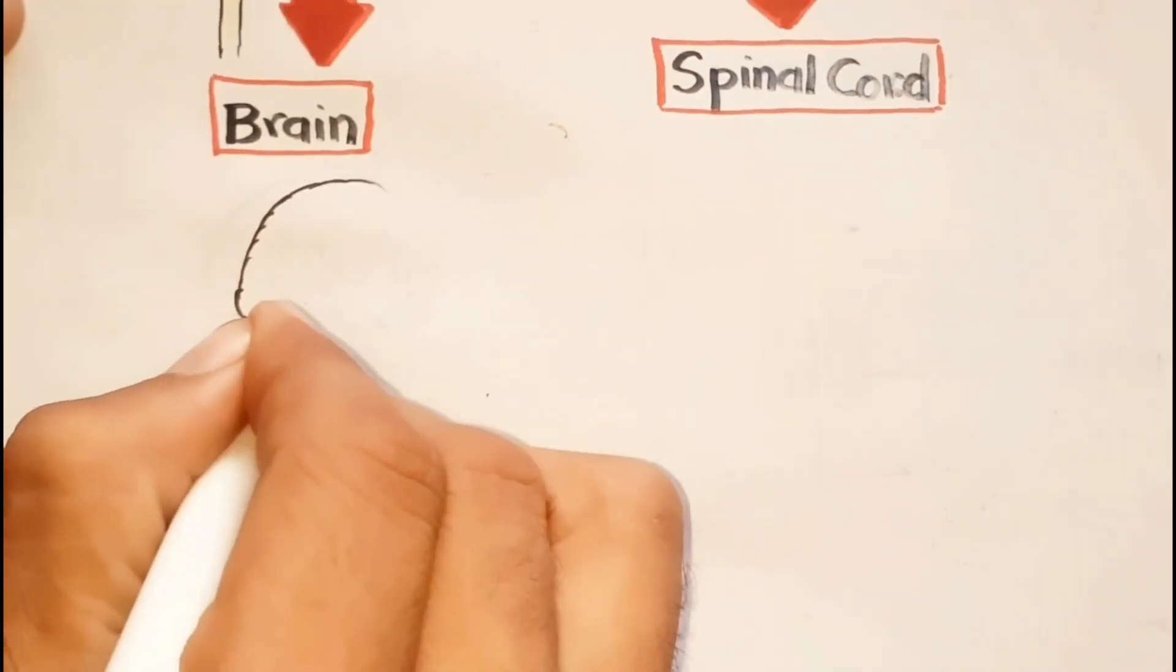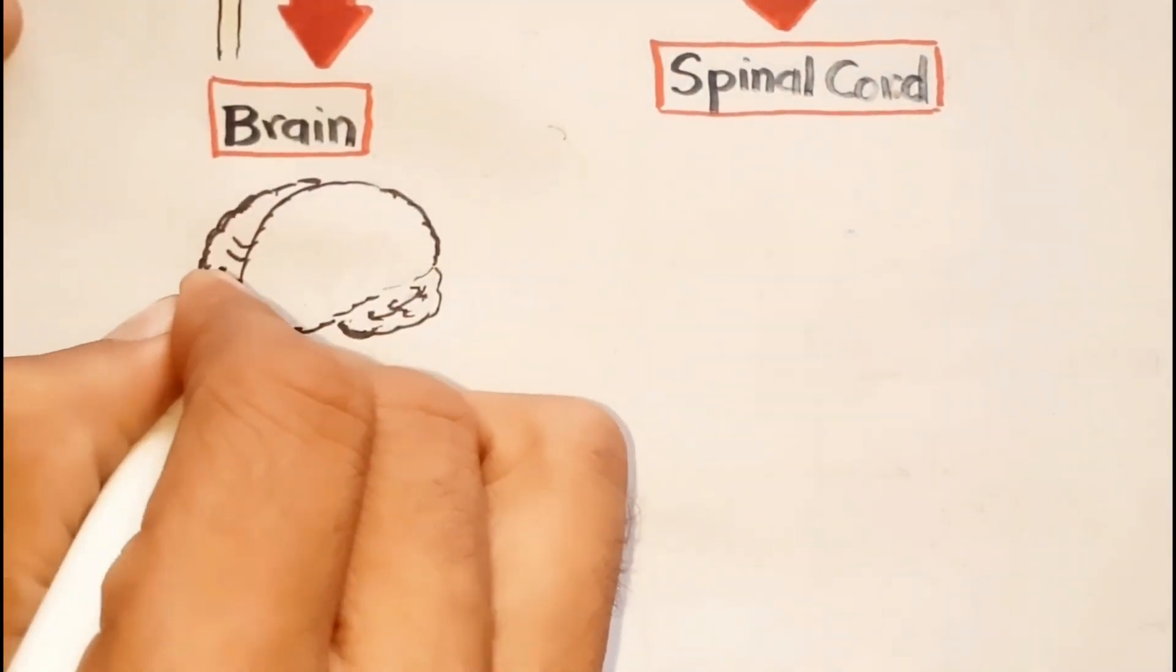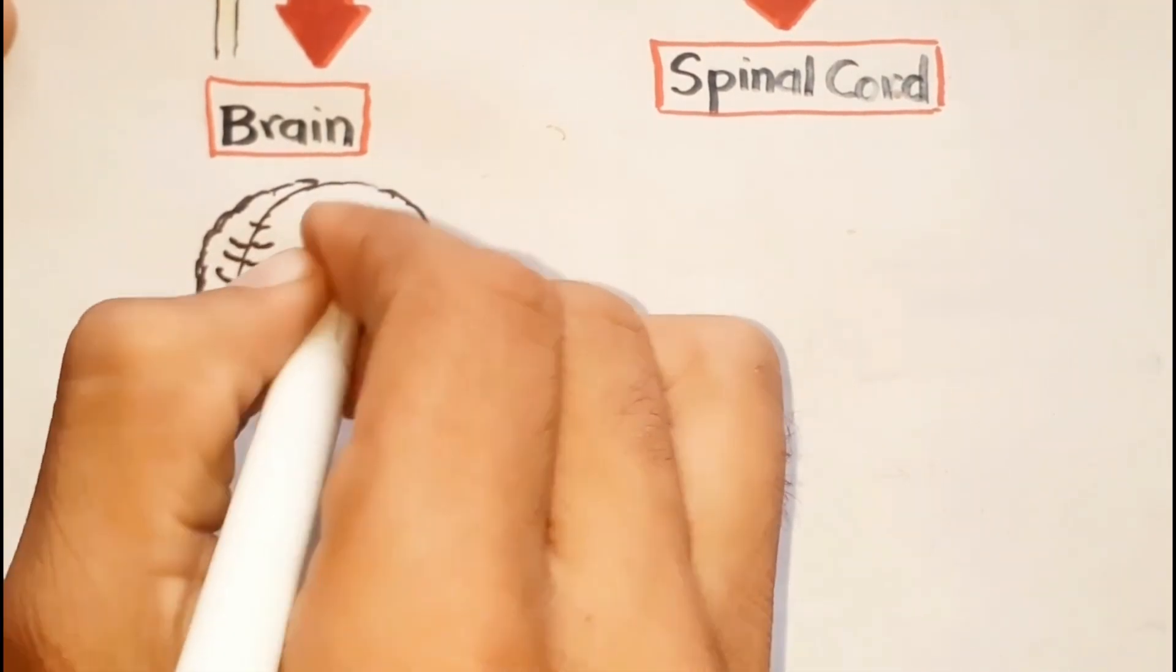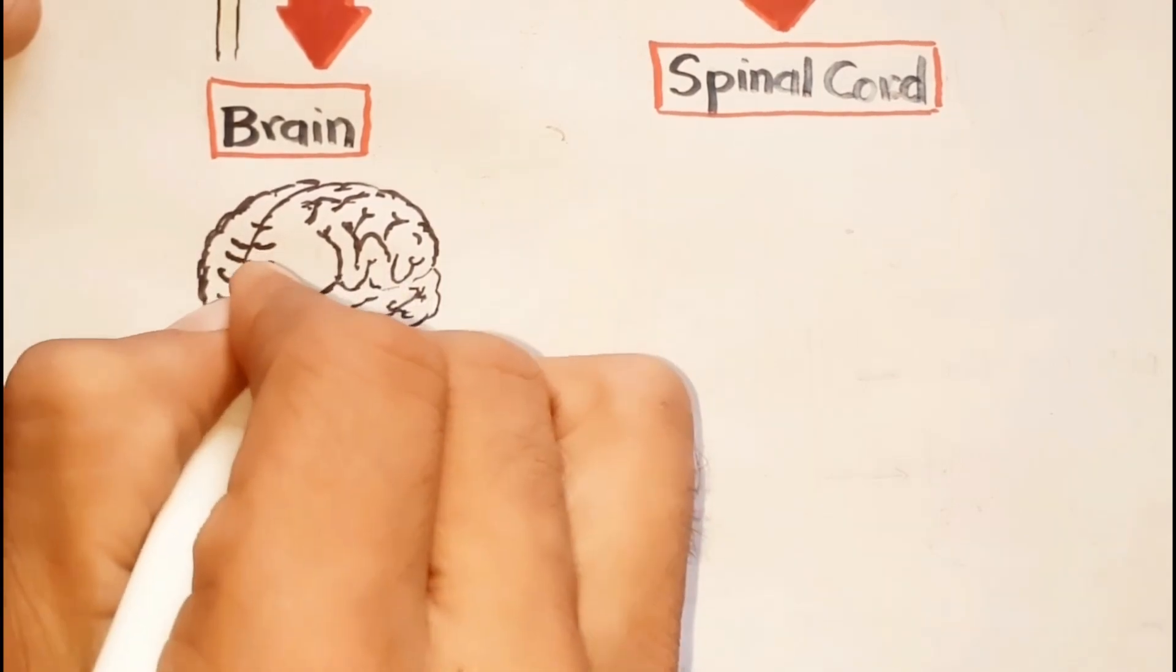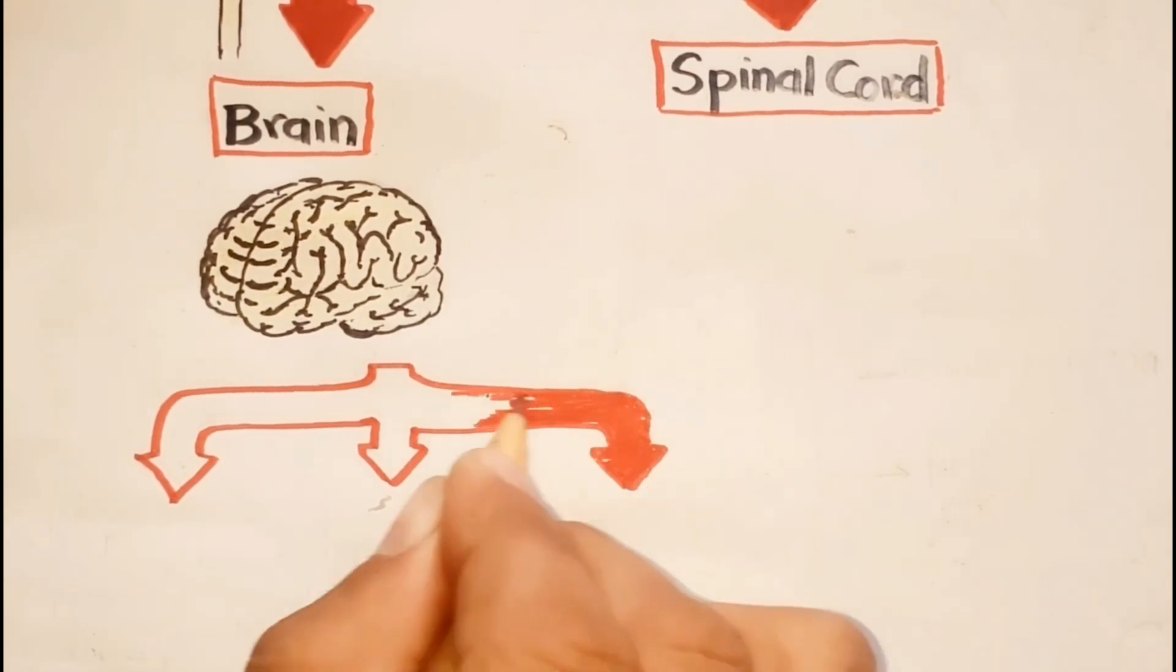The control center and major part of the nervous system is the brain. The brain is composed of about 100 billion multifolded neurons.